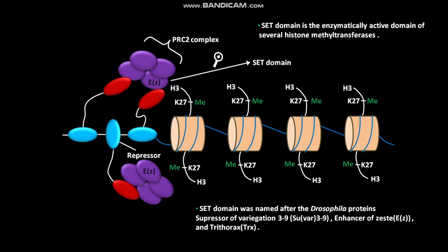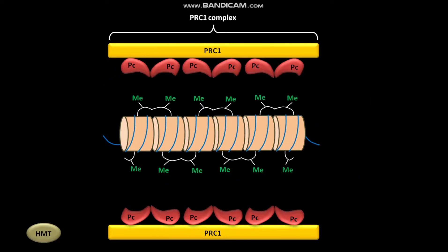Let us see what happens in the next step. The PRC1 complex has dimeric PC subunits. Each PC subunit contains a binding domain called a chromodomain.